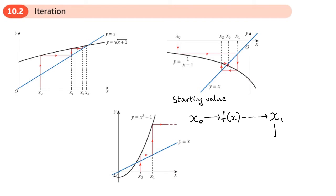Here comes the clever bit: we take x1 and put it back into f of x, and then the next thing that comes out will be x2. Then x2 goes into f of x and the next thing that comes out is x3, and so on.